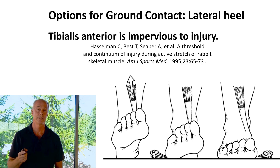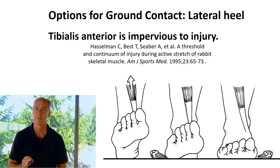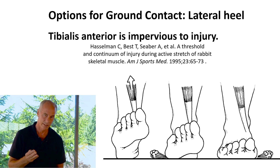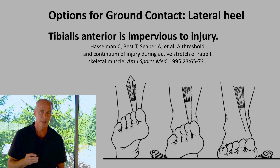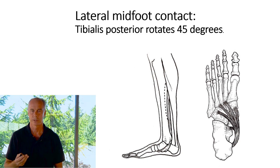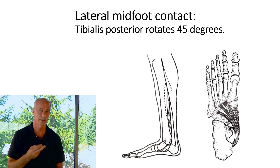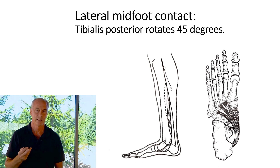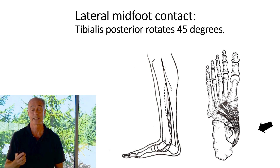If you've chosen a midfoot strike where your entire foot hits the ground at the same time, tibialis posterior is important because that's what decelerates calcaneal eversion. Tibialis posterior is a powerful muscle originating from the interosseous septum between the tibia and fibula, with nine different attachment points. Histological and cadaveric evaluations show that tibialis posterior rotates 45 degrees before it attaches.